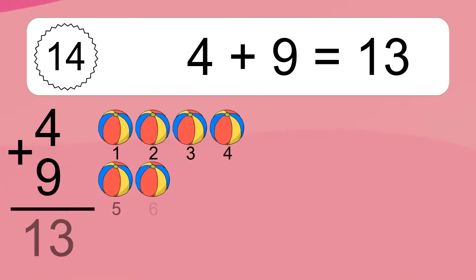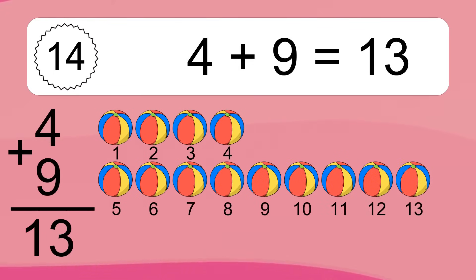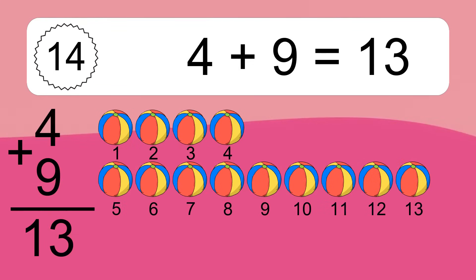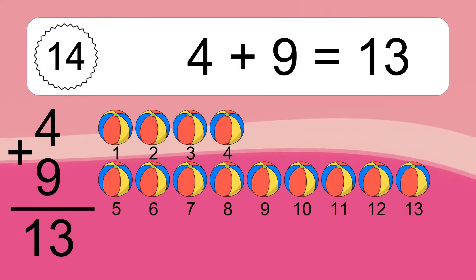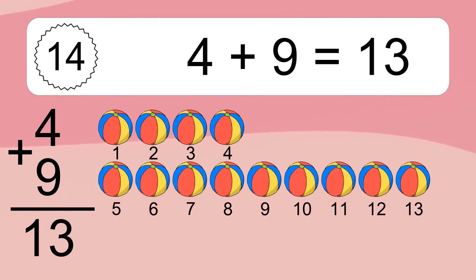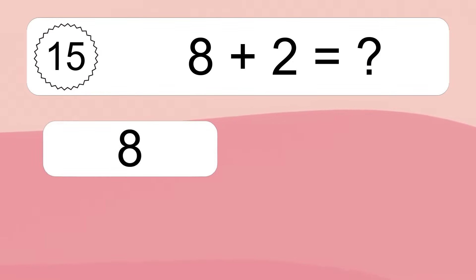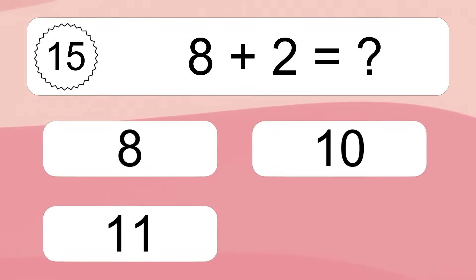4 plus 9 equals what? 4 plus 9 equals 13. Let's count it: 1, 2, 3, 4, 5, 6, 7, 8, 9, 10, 11, 12, 13.